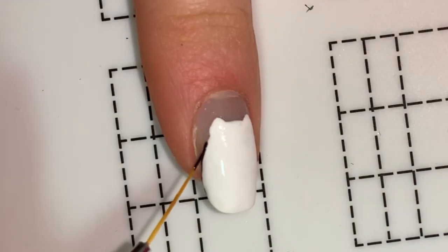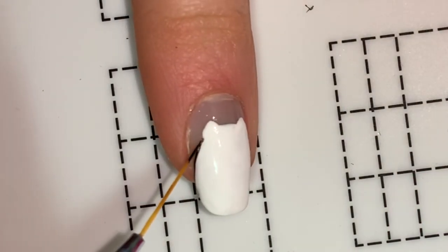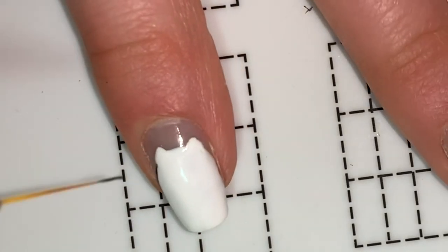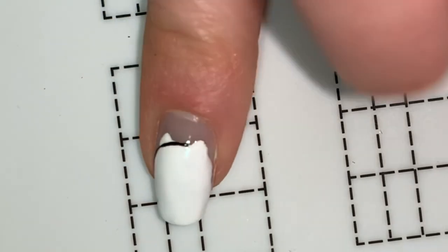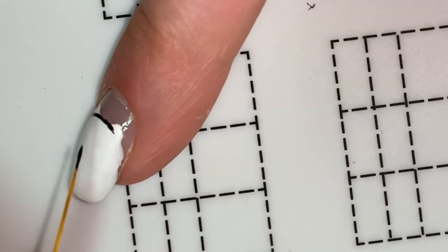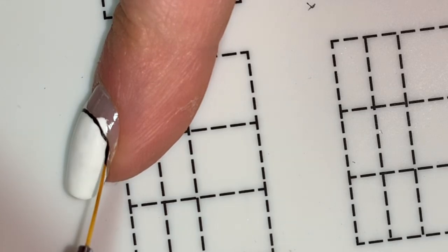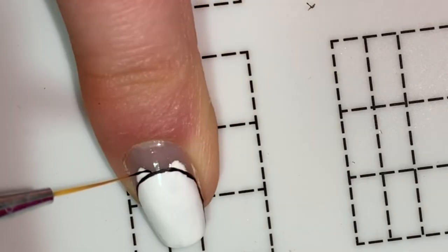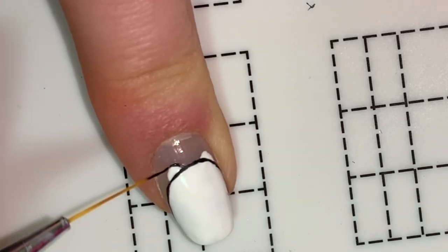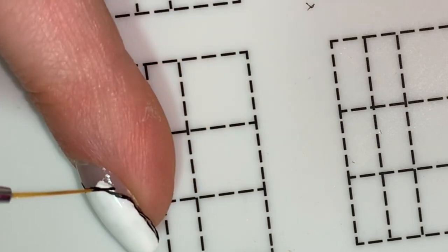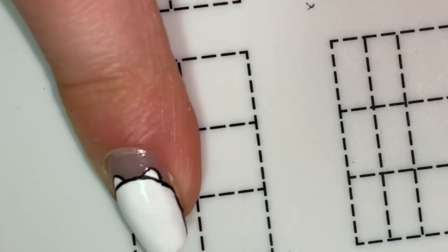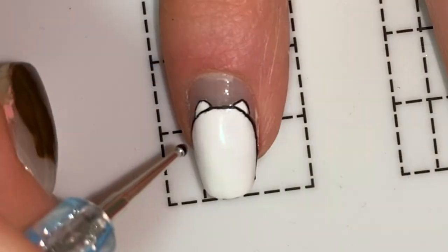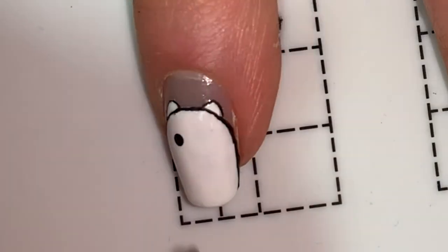Taking black acrylic paint, I'm starting off by outlining the first bear. Now using a dotting tool, I'm taking the smallest end and doing a dot for each of the eyes.